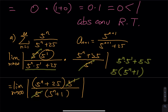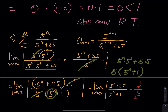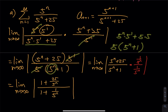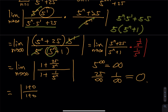The biggest degree in the denominator is 5 to the n, so divide each term by 1/5^n. As n approaches infinity: the top becomes 1 + 25/5^n, and the bottom becomes 1 + 1/5^n. Since 5 to the infinity is infinity, both 25/5^n and 1/5^n approach zero. So the result is the absolute value of 1 plus 0 divided by 1 plus 0, which equals 1. According to the ratio test, a result of 1 has no conclusion.